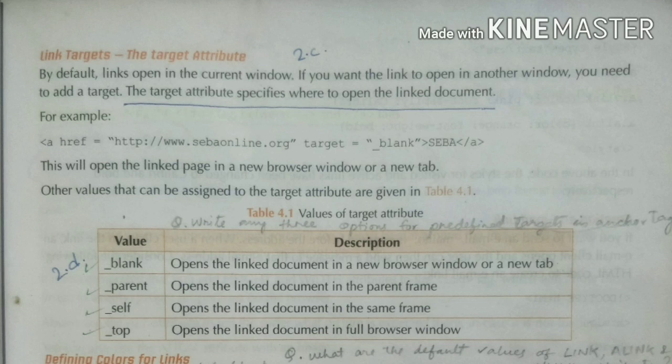If you don't give any target you just make a link, it will open in the same window. But if you want the link to open in another window — that is in a blank document or in some other file or some other browser — you need to add the target attribute. The target attribute specifies where to open the linked document. Suppose you want to open a link in the second or third page, you have to use the target attribute.